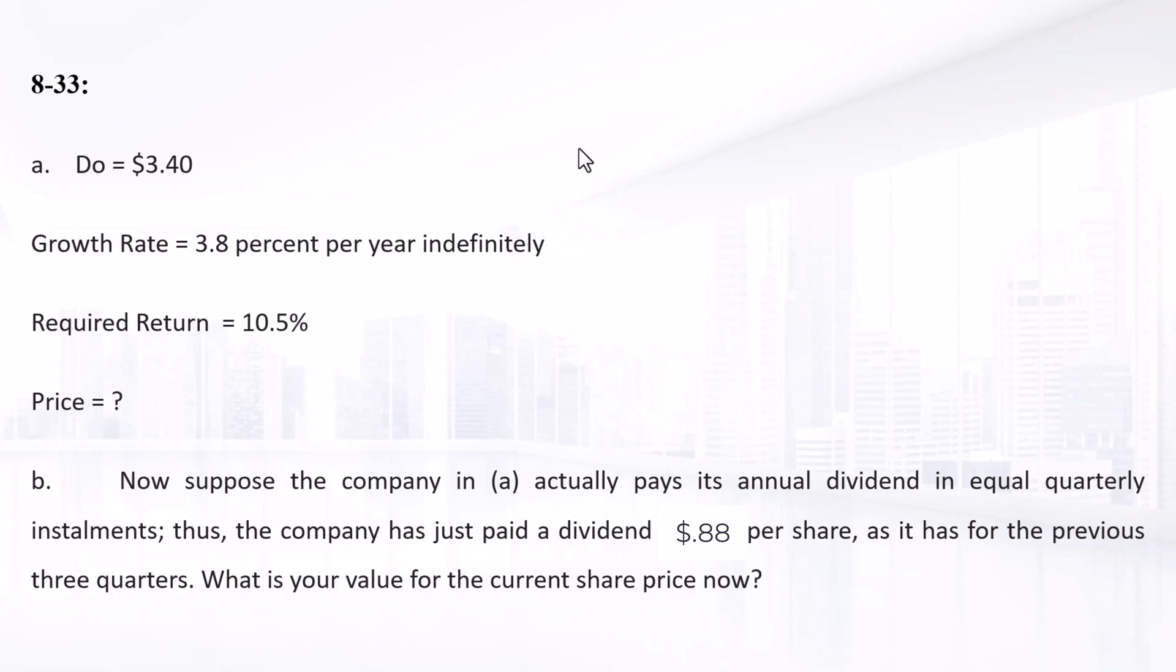Suppose a company currently pays an annual dividend of $3.40 on its common stock in a single annual installment and management plans on raising this dividend by 3.8% per year indefinitely. If the required return on the stock is 10.5%, what is the current share price?